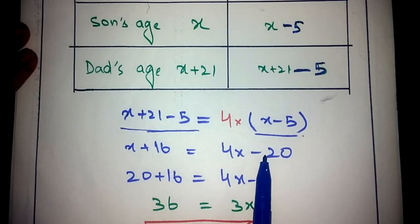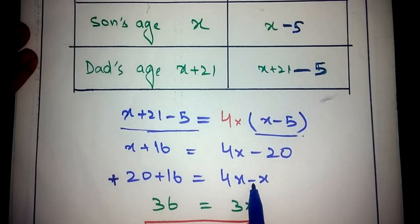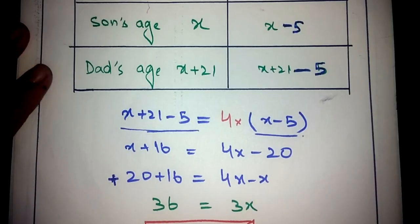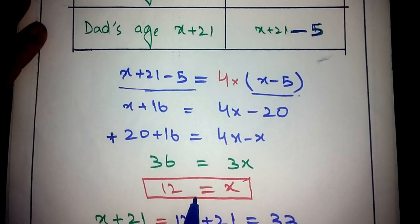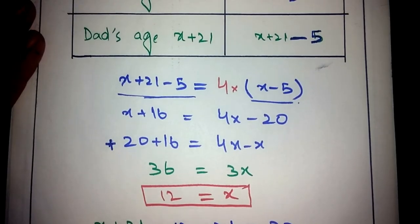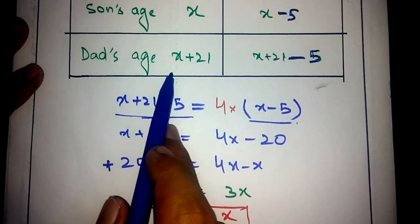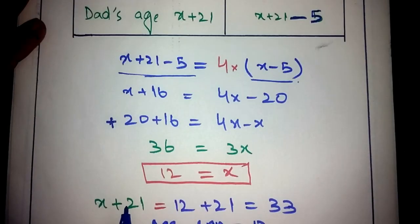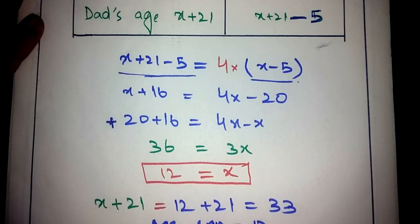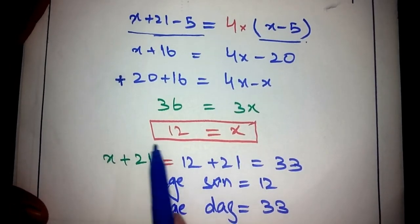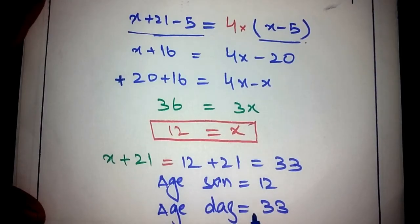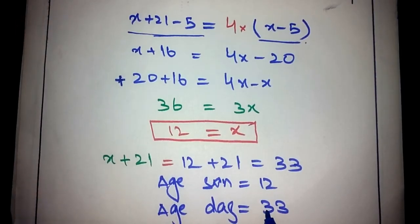Moving minus 20 to the left gives plus 20, and moving X to the right gives minus X. So 20 plus 16 is 36, and 4X minus X is 3X, giving X equals 12. The son's present age is 12. The dad's present age is X plus 21, so 12 plus 21 equals 33. The son is 12 and the dad is 33.